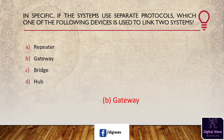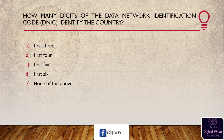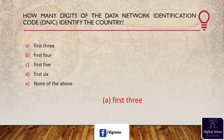Next question: how many digits of the data network identification code identify the country? Options are: first three, first four, first five, first six, and none of the above. The answer is the first three digits — the first digit identifies a zone, and the other two digits identify the country within the zone.